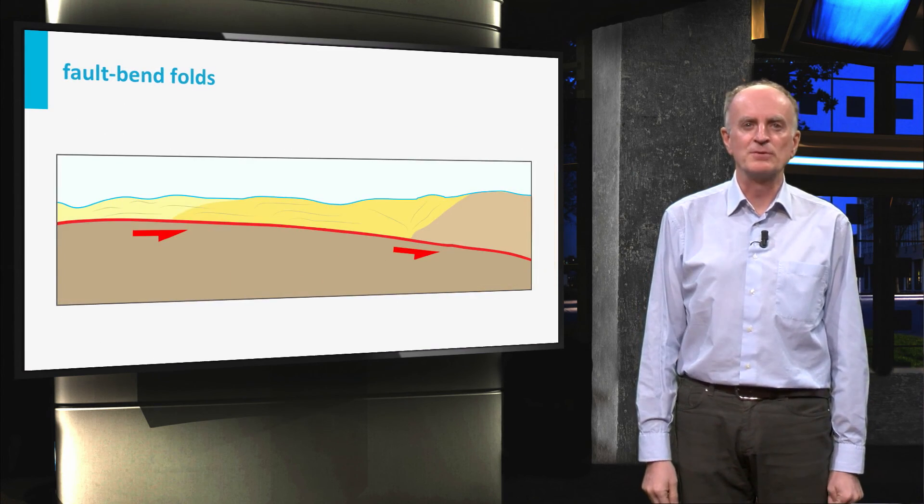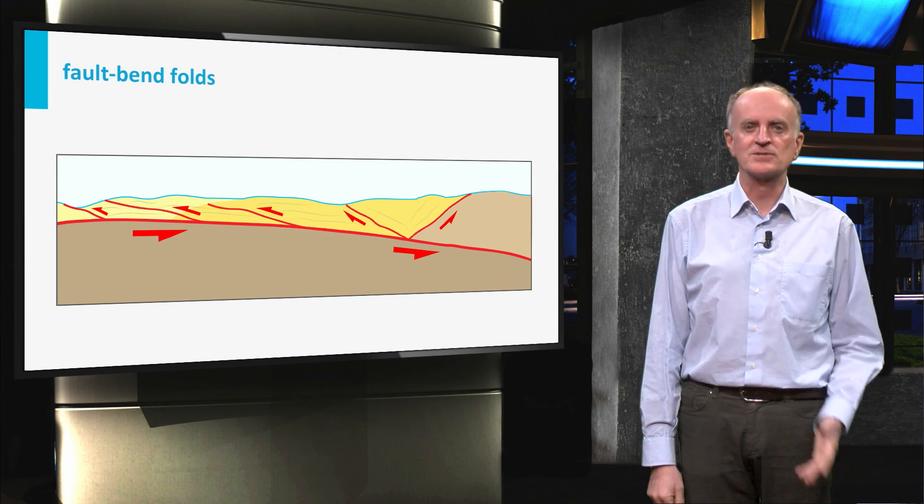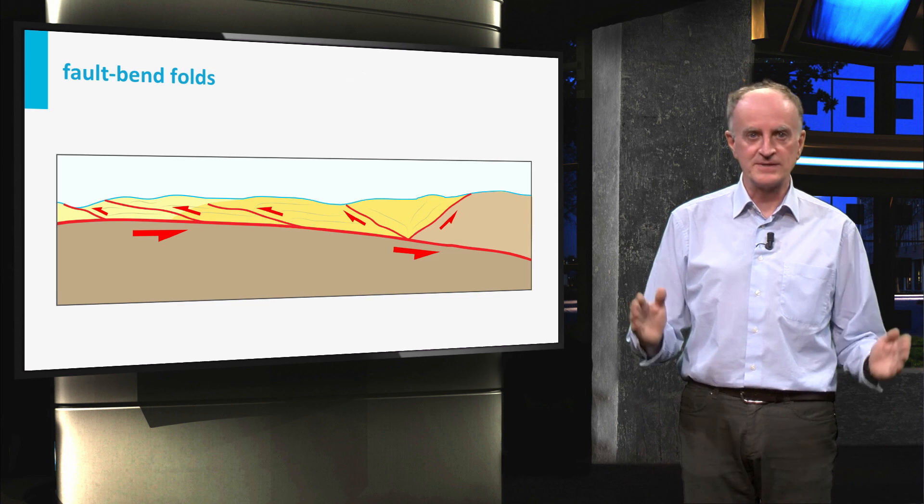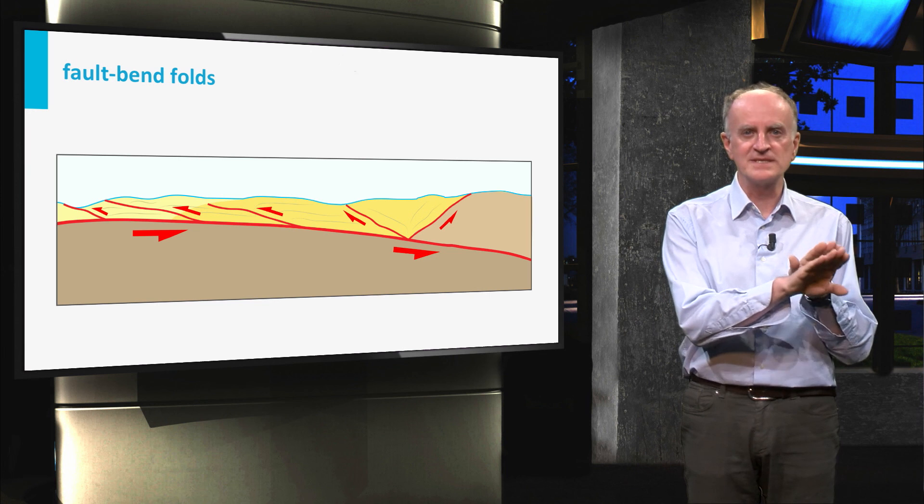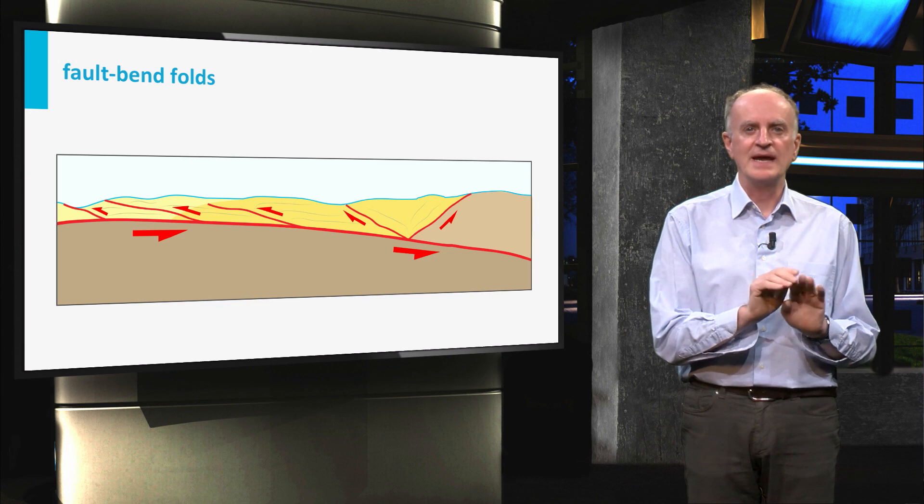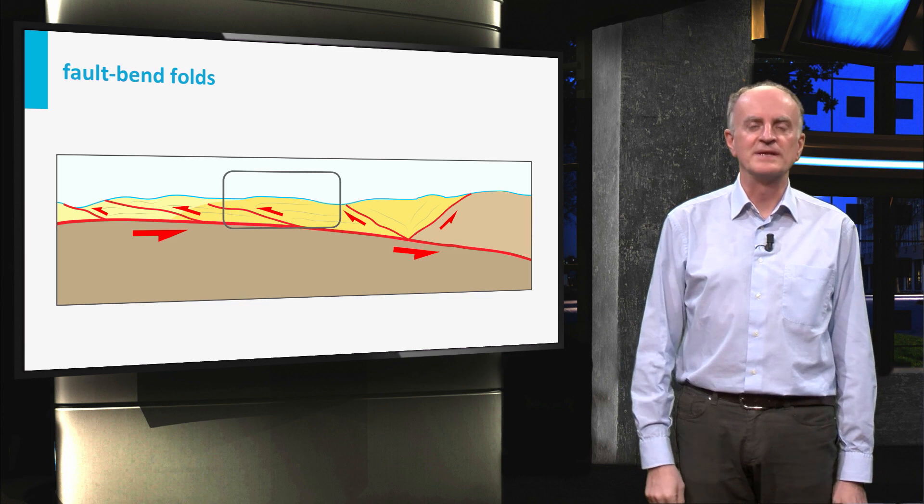Systems predominantly composed of passive folds are very common in the external zones of orogenic belts. Here, convergence between the plates is accommodated by thrust surfaces with the typical staircase geometry and associated fold-bend folds, like the one shown in the diagram.